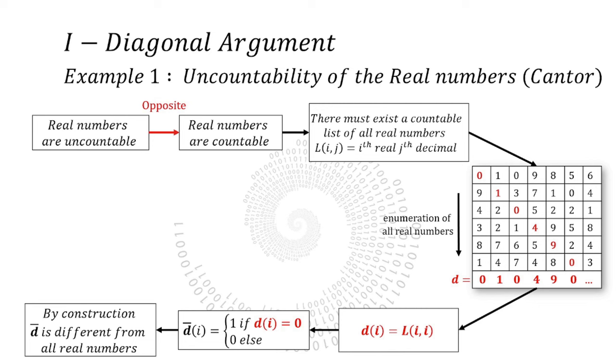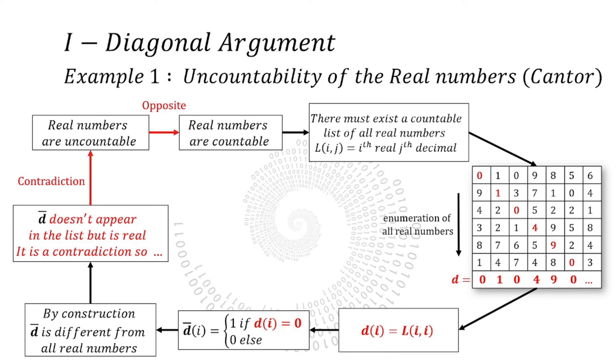So it can't be in the rows of this table. But on the other hand, counter D should be a real number, like any other decimal sequence. So this is a contradiction. Our assumption was wrong. So we get back on our feet. Real numbers are indeed uncountable. This was the diagonal argument.